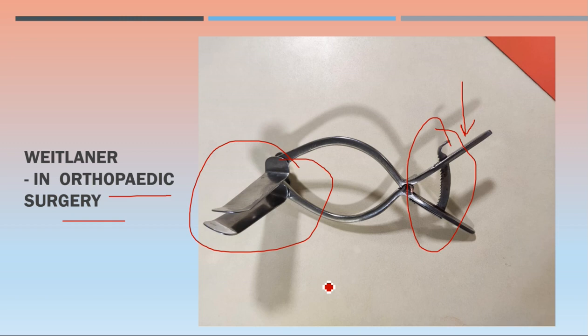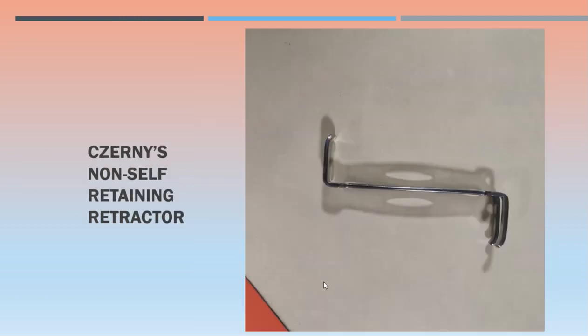What type of lever is this? Type one lever — force and motion in opposite directions. Then Deaver retractor — this is a non-self-retaining retractor. 'Non-self' is important: you will have to apply force every time when using this type of retractor. That's why it is called non-self-retaining.